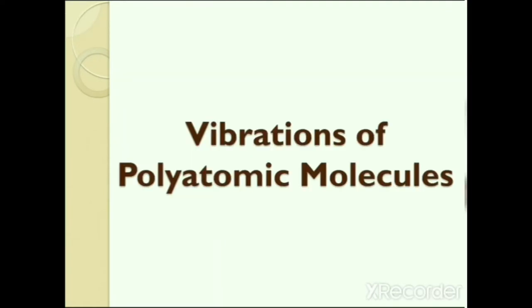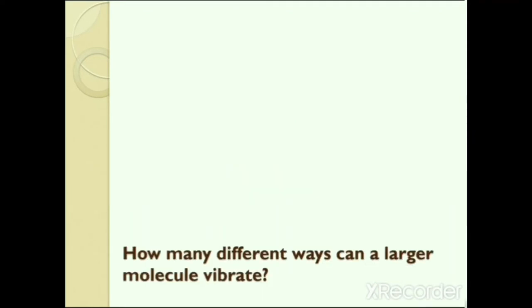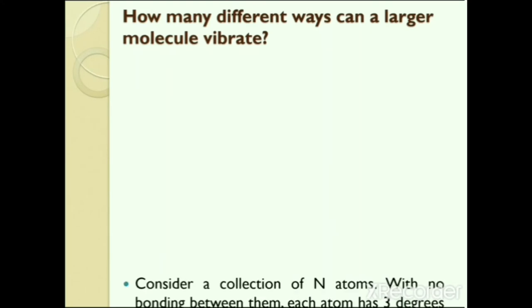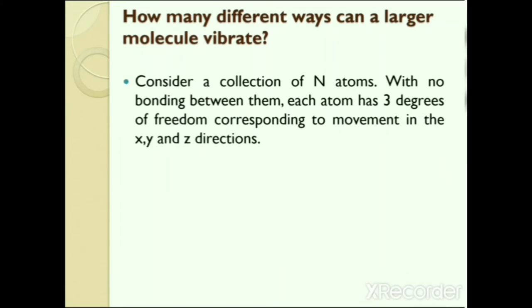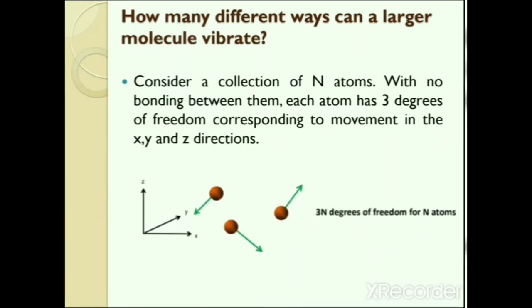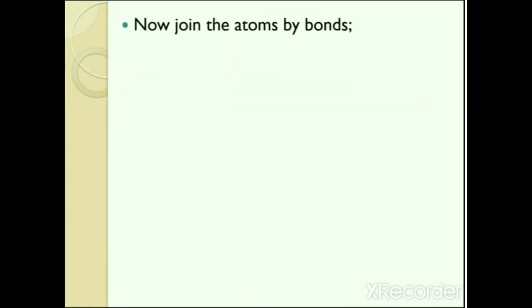Next is vibrations of polyatomic molecules. A diatomic molecule has one type of vibration, but in polyatomic molecules the scenario changes completely. For a collection of N atoms with no bonding, each atom has 3 degrees of freedom corresponding to movement in X, Y and Z directions, giving 3N degrees of freedom for N atoms. Joining the atoms by bonds generates either a non-linear or a linear molecule, restricting the movement.